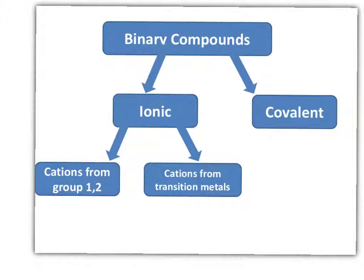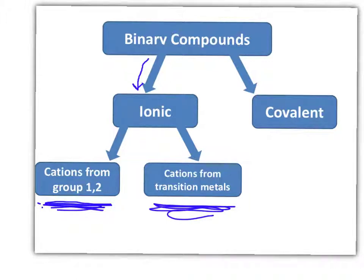There are really three different kinds of binary compounds that you need to be able to name. To understand those three different naming systems, let's take a look at how to decide which naming system to use. If your binary compound is ionic, you're going to use a naming system that either looks at cations from group one and two, or you might find that you have to use a different system for cations within the transition metals. Or, you may have a compound that's simply covalent, and that uses a different naming system.